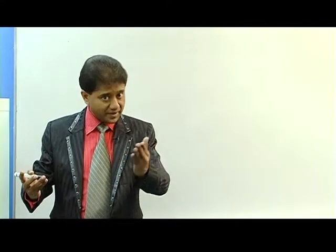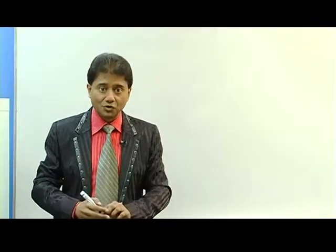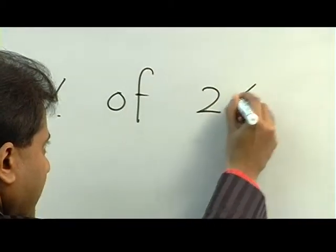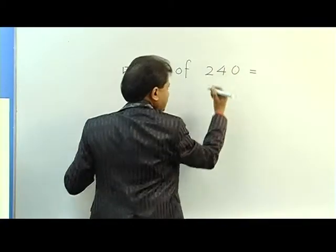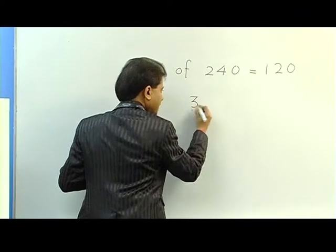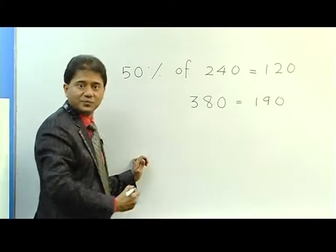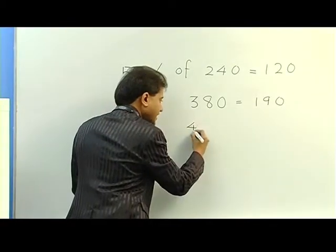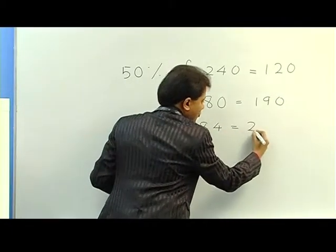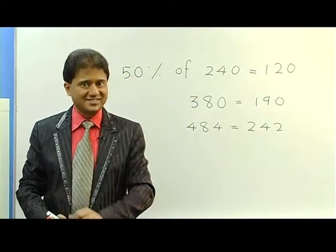Now let me explain how to calculate 50% of any number. 50% means half, so all you have to do is make the number half. 50% of 240 is 120. 50% of 380 is 190. And 50% of 484 is 242.